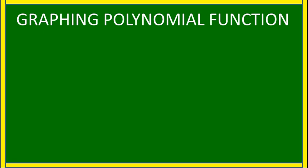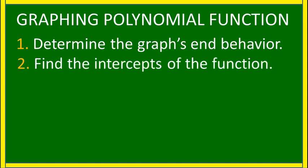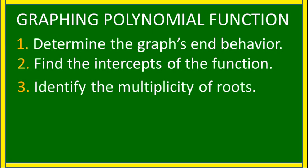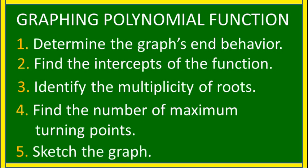There are five steps in graphing a polynomial function. The first is determine the end behavior. The second step is find the intercepts of the function. Third, identify the multiplicity of roots. Fourth is find the number of maximum turning points. And the last is sketch or draw the graph.